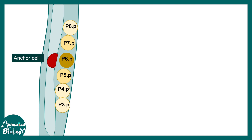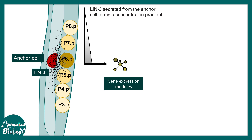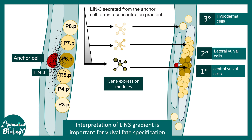The anchor cell is the inducer — it's a source of morphogen. It secretes a morphogen known as LIN-3, which is an EGF-like molecule. LIN-3 secretes from the anchor cell in a concentration-dependent manner, setting up a concentration gradient. Based on the concentration, different gene expression modules are activated in different responder cells. For example, P6.p cells activate module 1, while P7.p or P8.p cells activate different modules, leading to different fates. The moral of the story is that interpretation of the LIN-3 gradient is important for vulval fate specification.